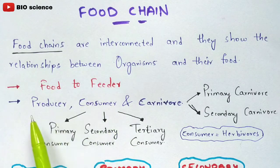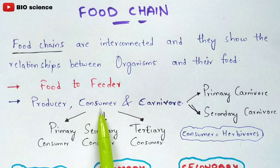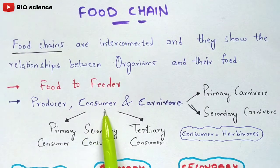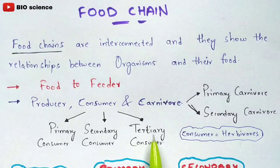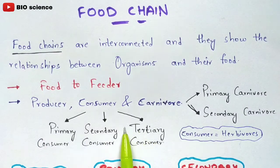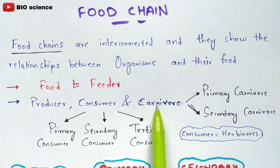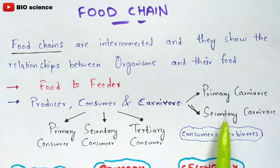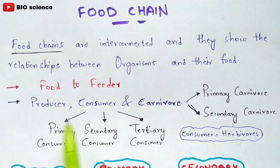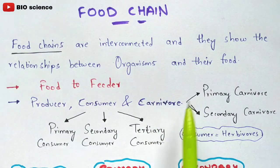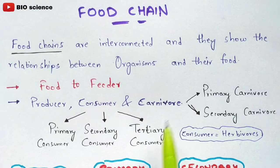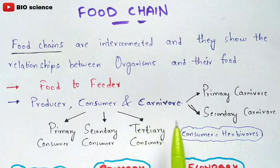The producer does not contain any sub-trophic levels, but the consumer, which is also called herbivore, will contain sub-trophic levels: primary consumer or primary herbivore, secondary consumer or secondary herbivore, and tertiary consumer or tertiary herbivore. The carnivore, which is the third trophic level, also contains two sub-trophic levels: primary carnivore and secondary carnivore. The type of food chain you select depends upon the type of example taken in the particular ecosystem.